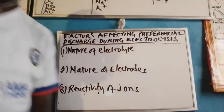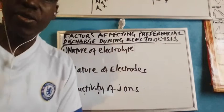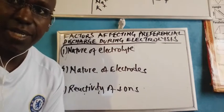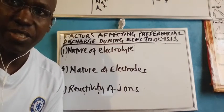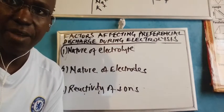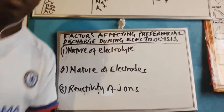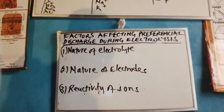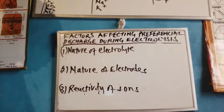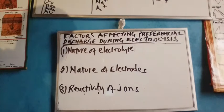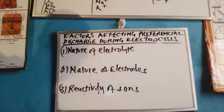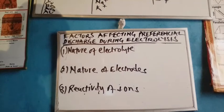Hello. In this session, we are going to look at the factors affecting preferential discharge of ions during electrolysis. Welcome. As you can see, there are three main factors affecting preferential discharge of ions during electrolysis, namely the nature of electrolyte, the nature of electrodes, and the reactivity of ions.